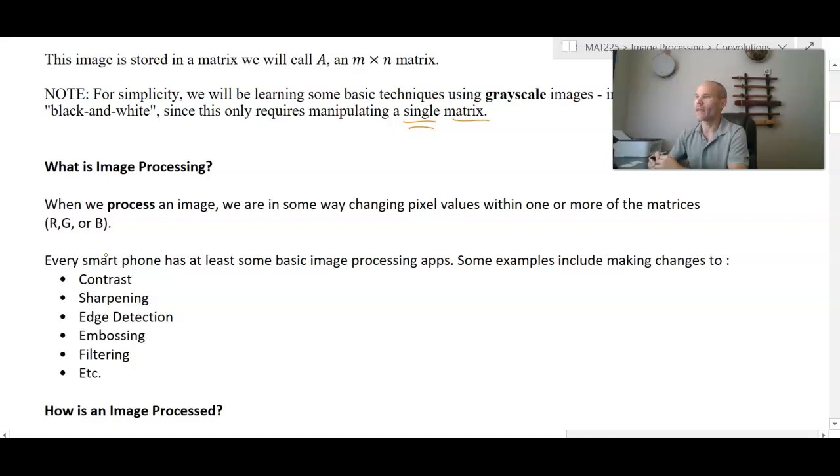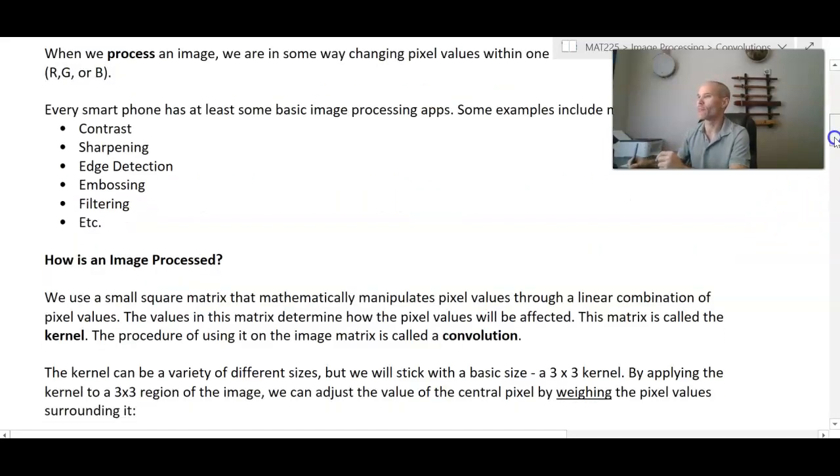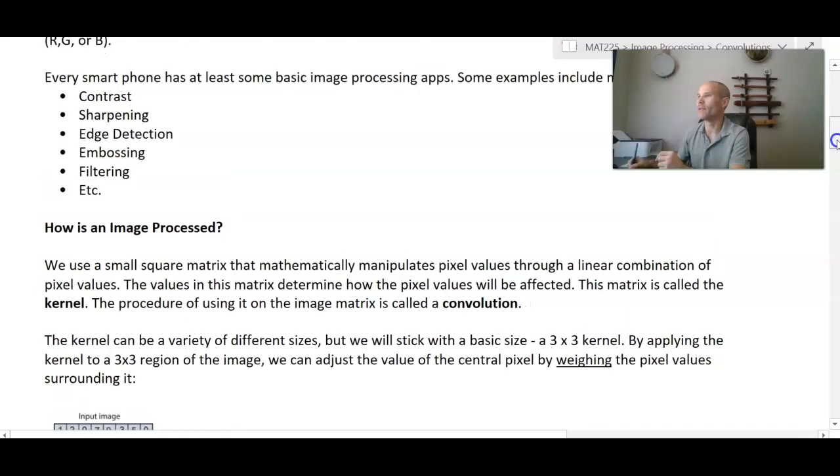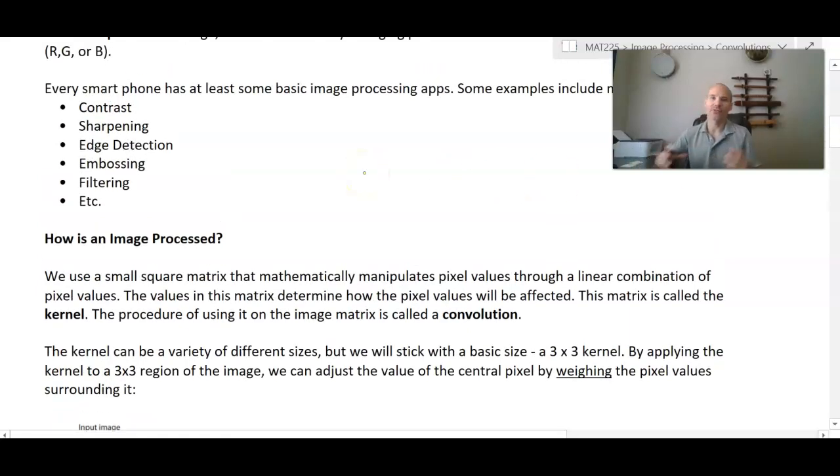So, in the next video, we'll actually take a look at the process of manipulating an image, and it amounts to creating a matrix that has strategic values in it that is then used in combination with each pixel value in our actual image, and it takes into account the surrounding pixels to somehow manipulate that pixel right in the center. And that matrix that performs this operation is called the kernel, and when you combine the kernel with your matrix, you are performing what is called a convolution. We'll take a look at that in the next video. Thank you.